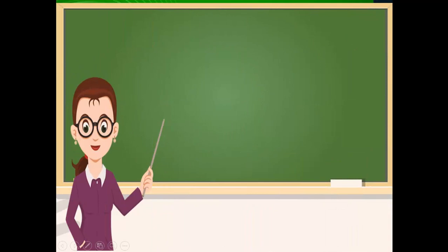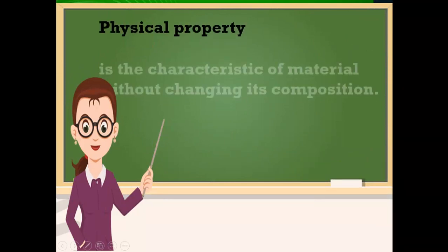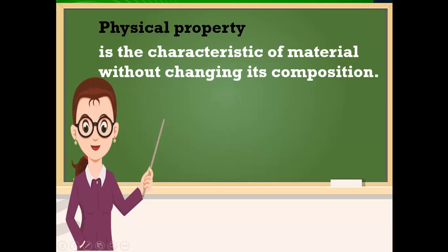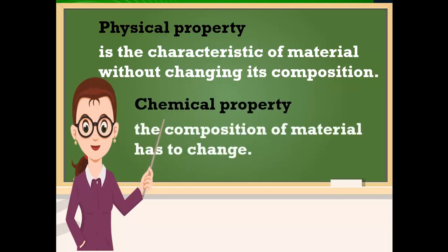So now, children, the physical property is the characteristic of material without changing its composition, while the chemical property means the composition of material has to change.